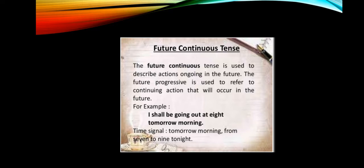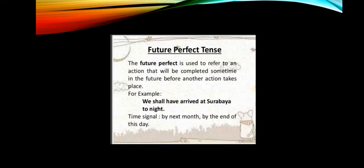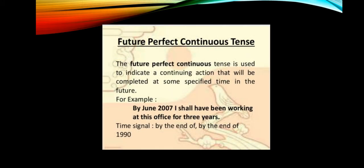Future continuous tense is used to describe ongoing actions in the future — for example, 'I shall be going out at 8 tomorrow morning' or 'We will be listening to the English class tomorrow by this time.' Future perfect tense is used for actions assumed to be completed at some point in the future before another action takes place — for example, 'We shall have arrived at Surabaya tonight.' Keywords include 'by next month' and 'by the end of the day.'